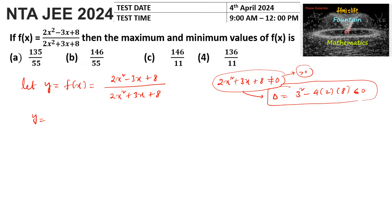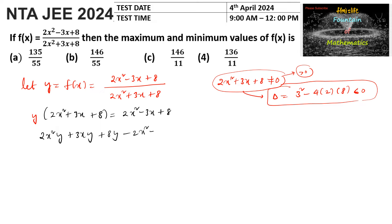Cross-multiplying, we get y(2x² + 3x + 8) = 2x² - 3x + 8, which gives 2x²y + 3xy + 8y - 2x² + 3x - 8 = 0. Regrouping, this becomes x²(2y - 2) + x(3y + 3) + (8y - 8) = 0.